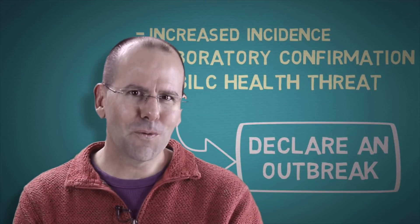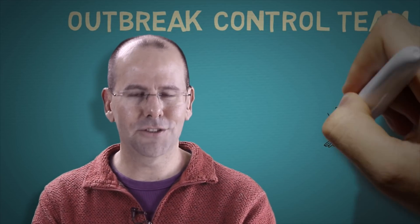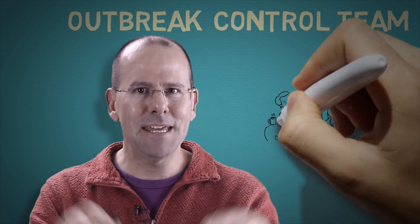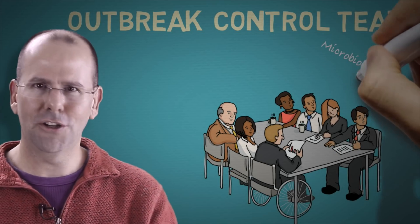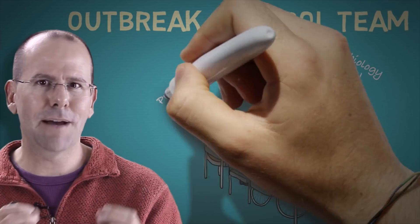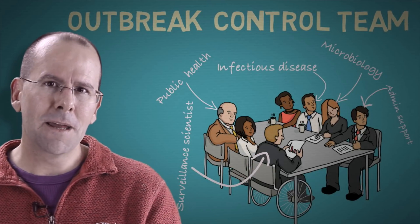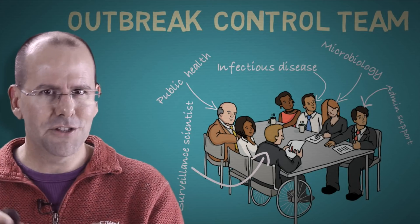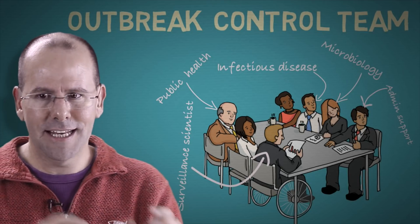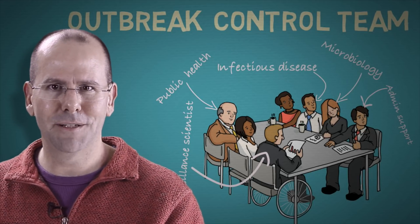So what next? We would convene an outbreak control team, and that team needs to have the right mix of skills. The outbreak control team will include people from microbiology, infectious disease, public health specialists, surveillance scientists, and you may have some admin support. The point is that you want the right mix of skills so that you can conduct the investigations and implement the control measures needed to protect the public.